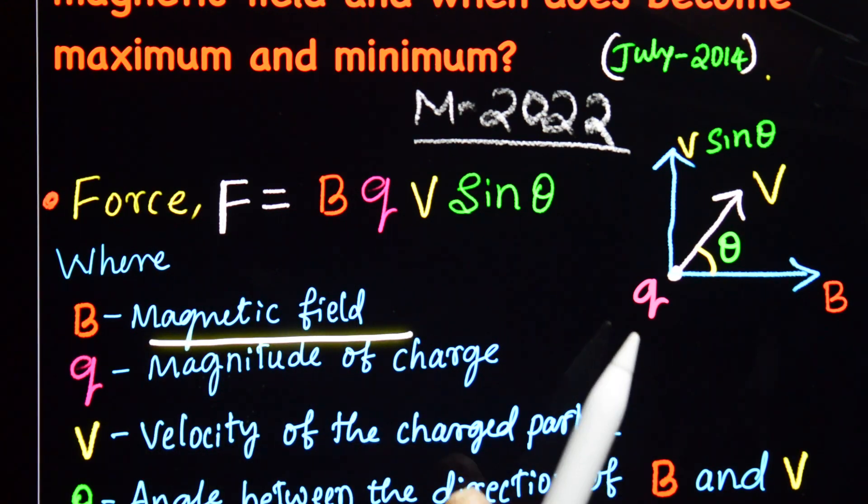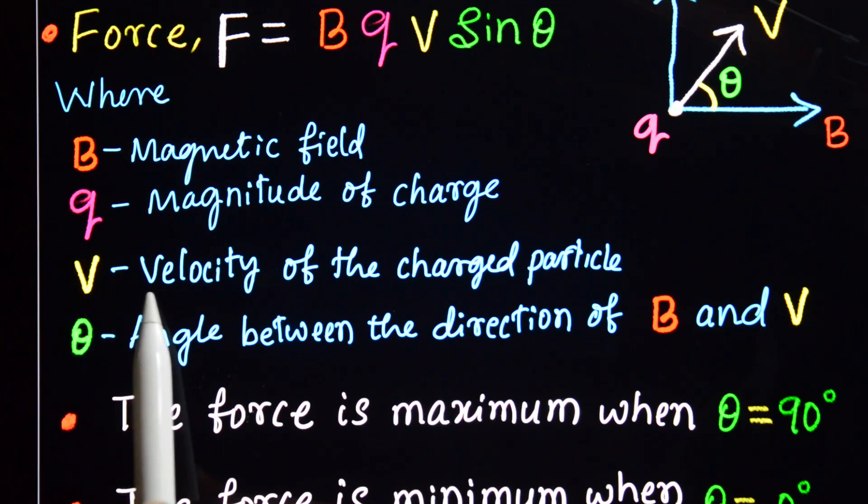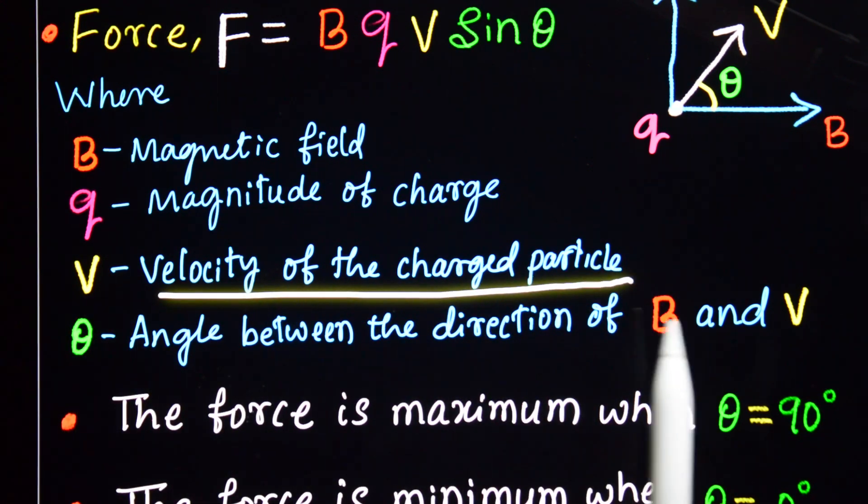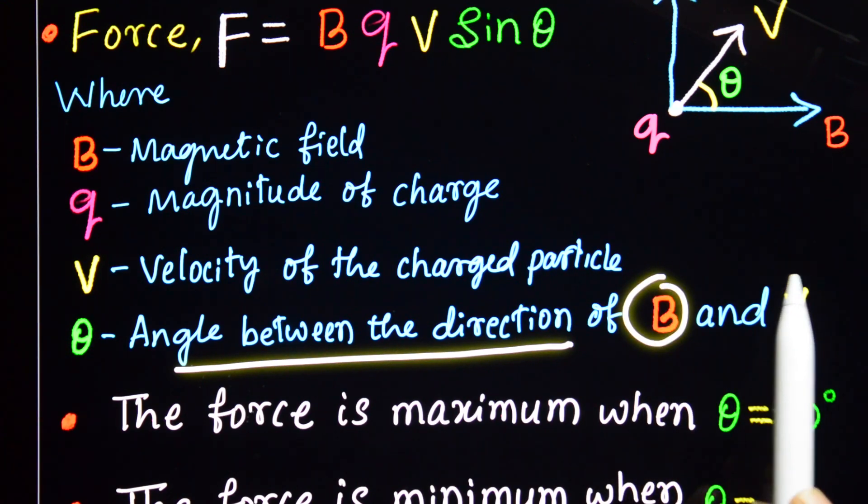What is B? B is magnetic field. Q is the magnitude of a charge. V is the velocity of a charged particle and θ, that is the angle, that is the angle between magnetic field and the velocity.